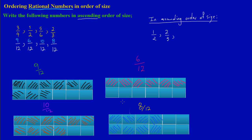The next fraction is nine out of twelve, which is three over four. And the largest fraction is ten out of twelve, which is five over six. So my final answer written in ascending order of size is: one-half, two-thirds, three-quarters, five-sixths. It's really that easy when writing fractions in order of size.